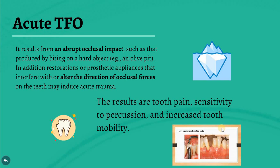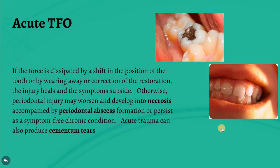Acute trauma from occlusion results from an abrupt occlusal impact — for example, biting on a hard object, or adding a restoration that interferes with or alters the direction of occlusal force, like inserting a high spot filling. The results are tooth pain, sensitivity to percussion, and increased tooth mobility. If the force is reduced by a shift in tooth position, wearing away, or correction of the restoration, the injury may heal and symptoms may subside.